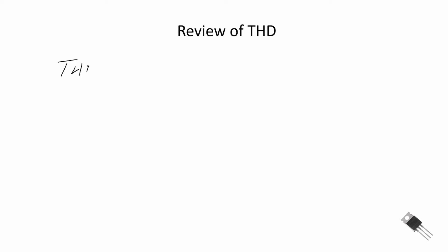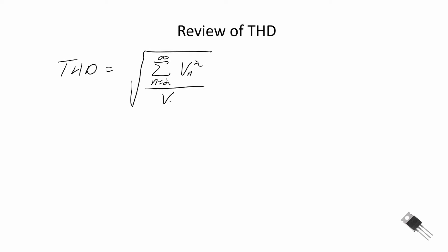Let's review total harmonic distortion. Recall that THD was equal to the power in the higher-order harmonics divided by the power in the fundamental harmonic. We write that as a sum from n equal to 2 to infinity — so our second, third, fourth harmonic and its power — squared, all divided by the power in our fundamental harmonic, times 100%.